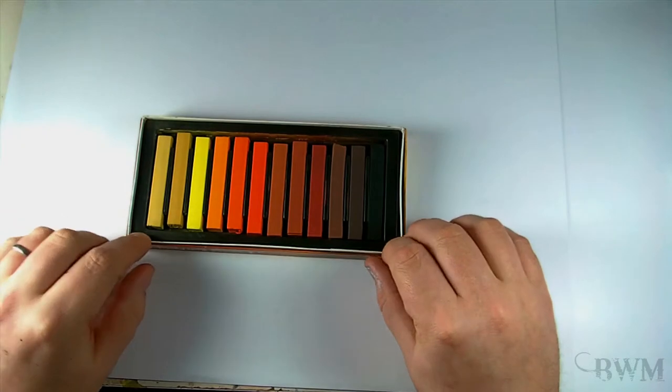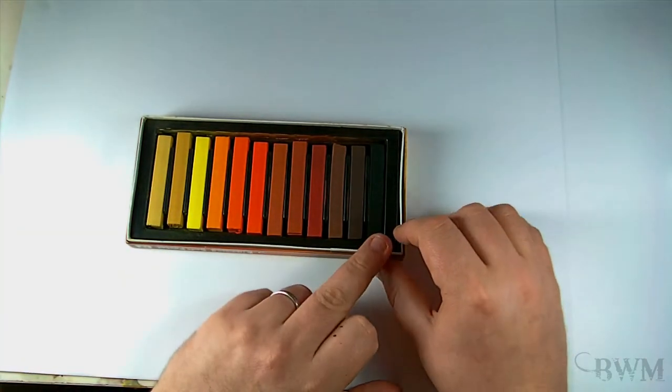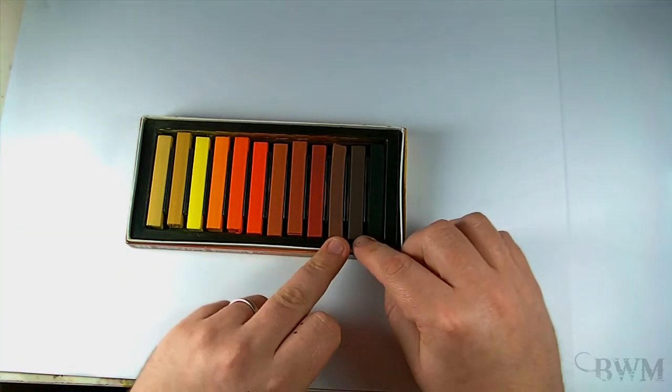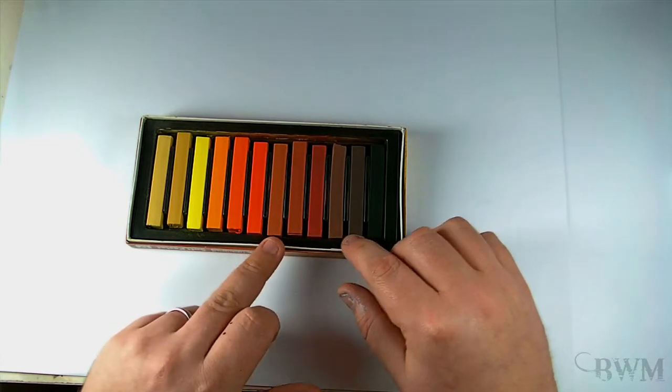You get the tones, the soot, the dark rusts, dark mud, and then you're going on to the lighter rusts. Probably the oranges. I can't see me using them for anything specific.